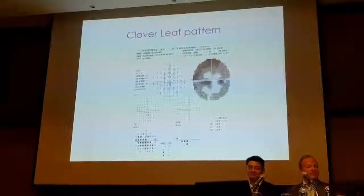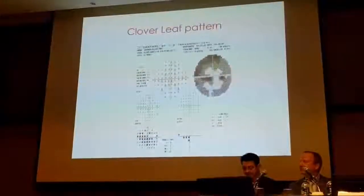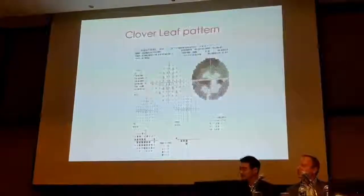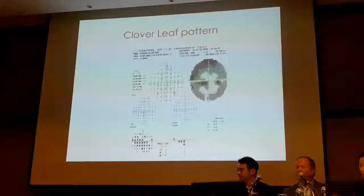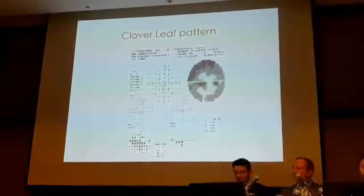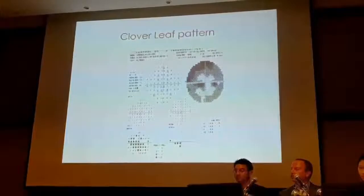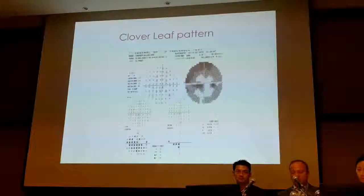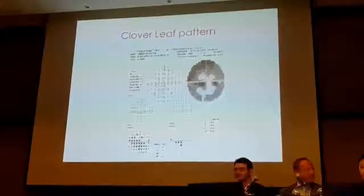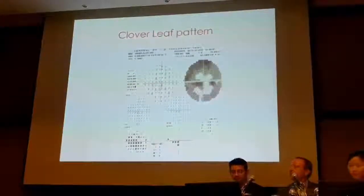Visual field is a very important test in functional visual loss. Depending on the algorithm, the machine first places four steps in the center and then extends mathematically outward. A classic finding is a cloverleaf pattern: the patient initially sees the stimulus and clicks, but then thinks, 'I'm not supposed to see that,' and stops clicking. That's why you get the cloverleaf pattern.